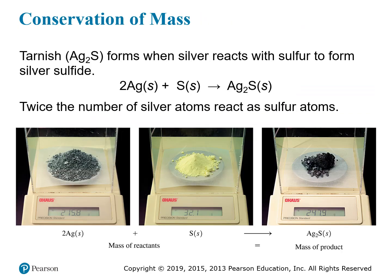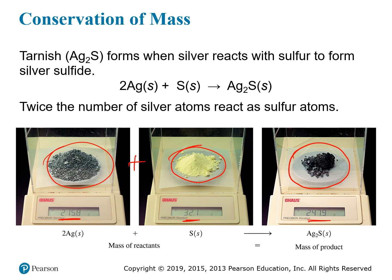Here we can see what that reaction actually looks like. We have our reactants on the left-hand side: two moles of silver with a mass of 215.8 grams weighed out on a scale, and one mole of sulfur with a mass of 32.1 grams. If you take these two components and react them completely with one another, you end up with one mole of silver sulfide, which has a mass of 247.9 grams. The sum of the individual reactant masses equals the mass of the product.